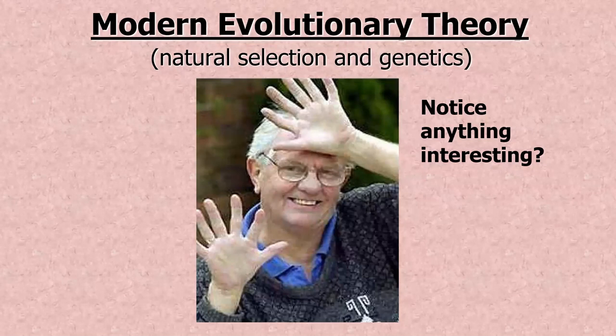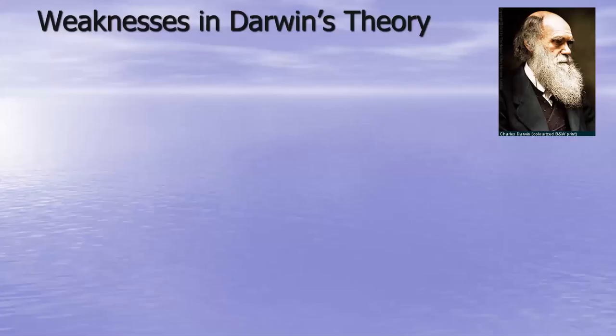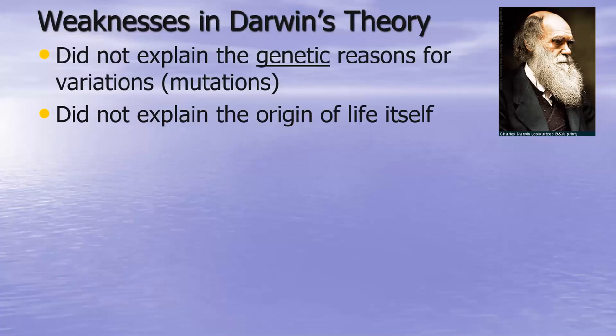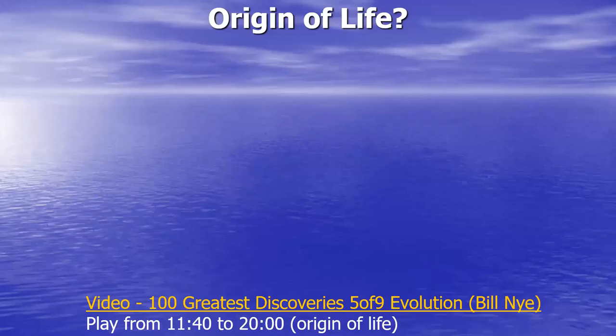If this person's only way to make money was to be a mitten model, then they would probably not survive. But if they were able to play piano and earn a living from it, they might actually have an advantage because they've got extra fingers to reach extra keys. Humans are not constrained by their environment as much as other organisms, so human evolution today doesn't really apply the same way as it does in the natural world. Darwin also did not know about the origin of life itself, so those are some weaknesses in his theory, and that's what we attempt to add on to our modern theory of evolution.